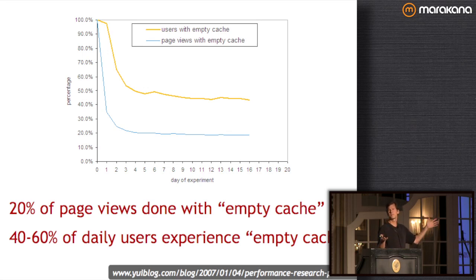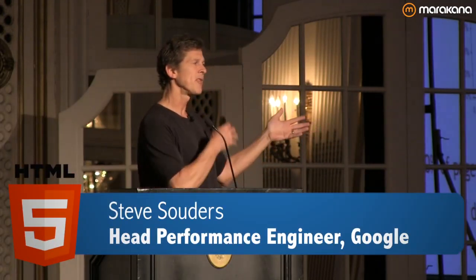When we translated 20% of page views into unique users, about half of daily users came in at least once without Yahoo's resources in their cache. Why the difference? Usage patterns: if the typical session is five page views, the user comes in the first time with an empty cache, but the next four views are primed. So they only register once from the unique user perspective. Users really anchor on a negative experience — that first slow page load gives them a negative perception of your brand.